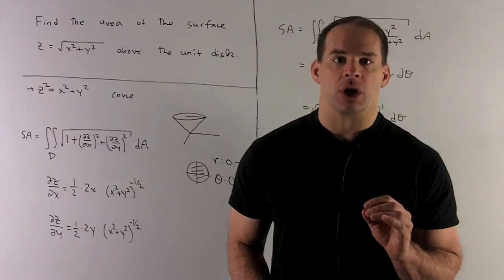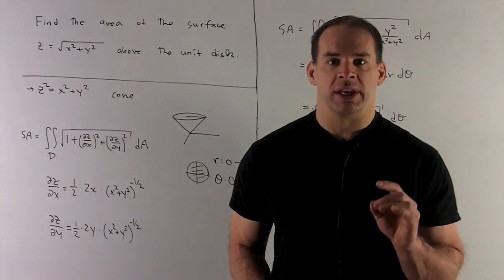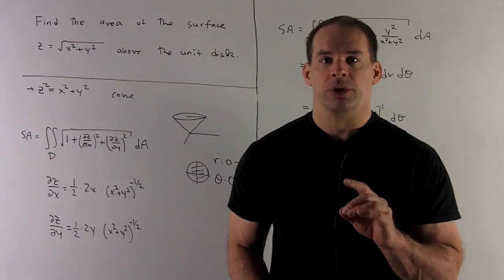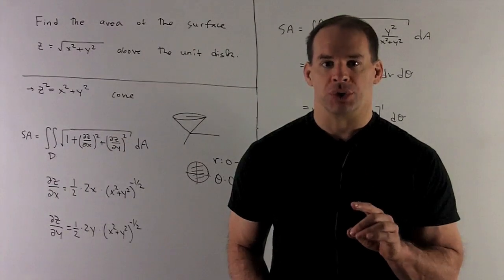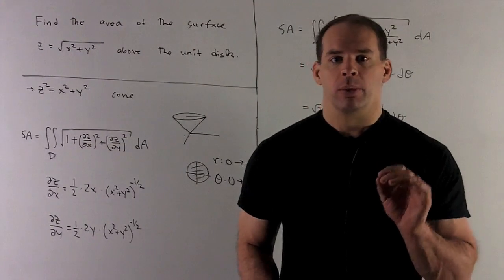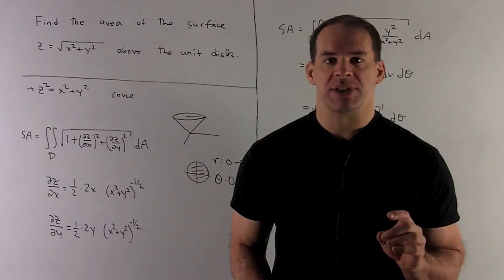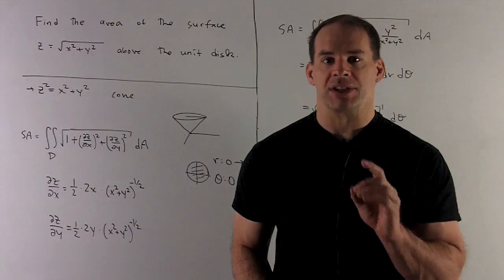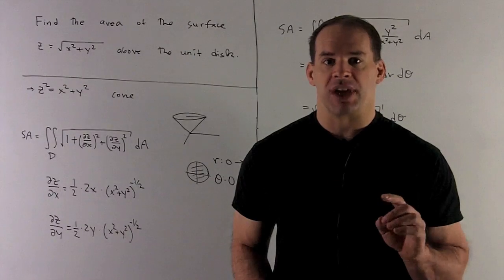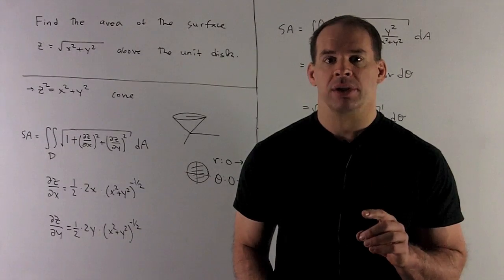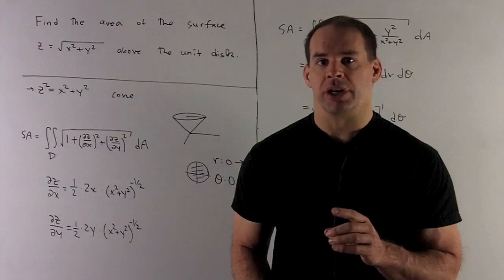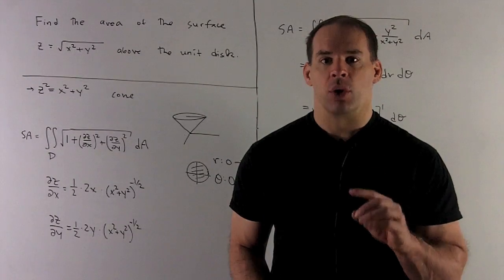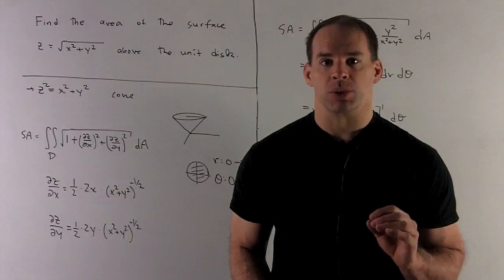Let's calculate the partials. We have z equals x squared plus y squared to the 1 half, so we need to do chain rule with partial derivatives. With respect to x, the half comes down, leave the inside, take one off the exponent makes it minus a half. Derivative of the inside with respect to x gives me 2x. So x is the variable, y is treated as a constant. I clean it up, I get x over square root of x squared plus y squared.